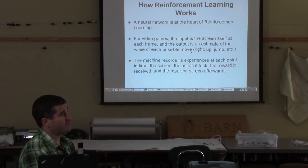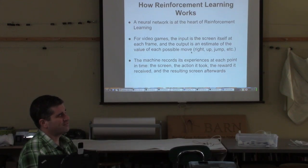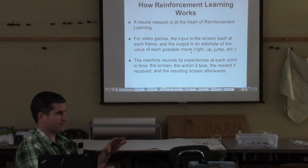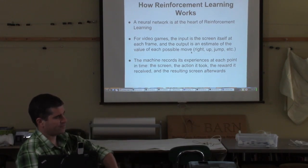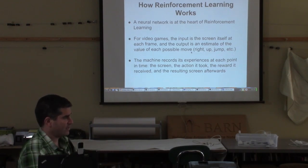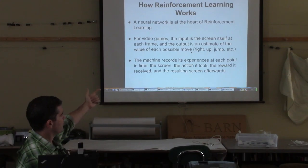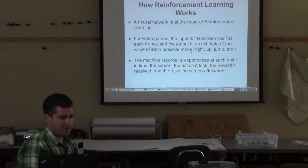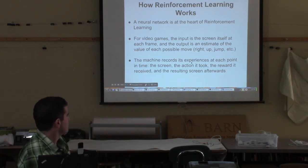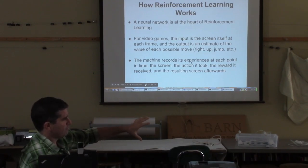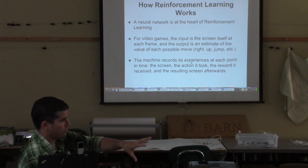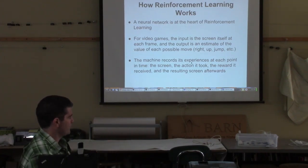I don't think there's a move that's A and B at the same time, but I don't think it's actually used in the game. So that's the output — 15 outputs, including do nothing, which is a valid action. The output of your neural network at each step is its estimate of the best move. Every time it makes a move, it records the experience: the screen before the move, the move that it made, the reward — a change in score or if it got killed — and then the screen that resulted from that move.